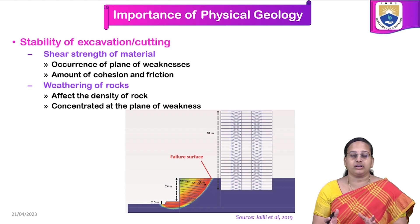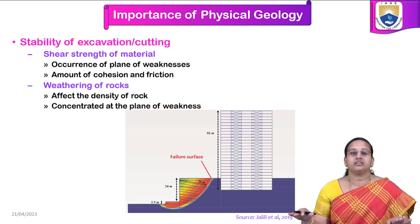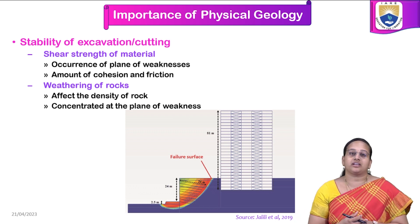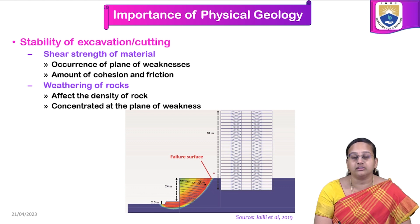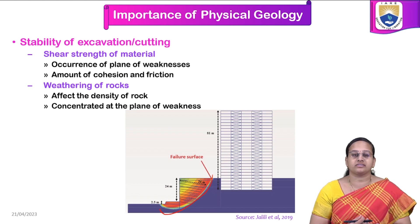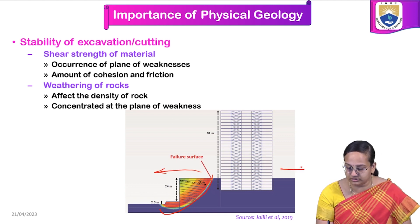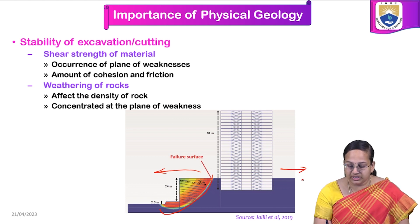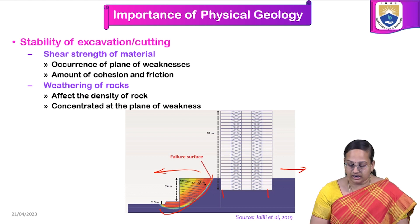For a building to be constructed, the surface where construction happens has to be made uniform or flat. To achieve a flat ground, we need to excavate at certain locations and cut excess portions at others — for example, at the foot of a hill. The stability of that excavation or cutting is very important, because away from the building there will also be undulated soil, not a flat terrain.